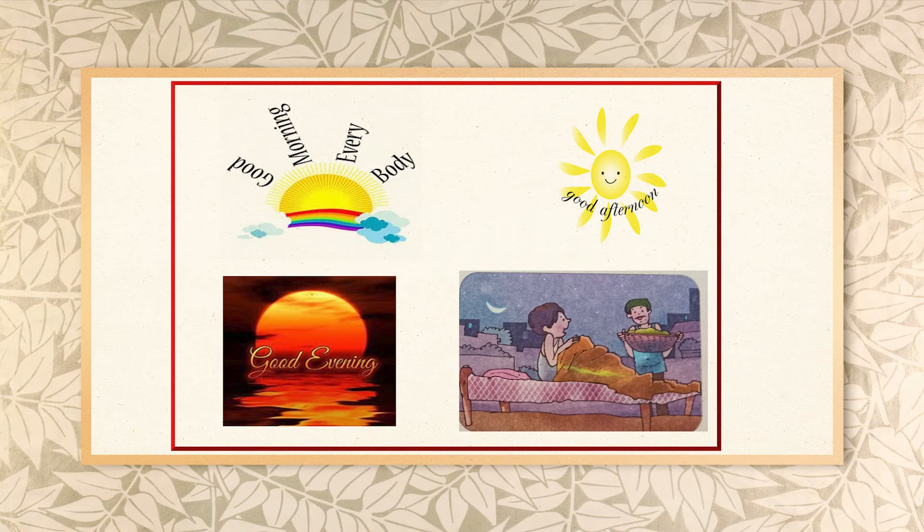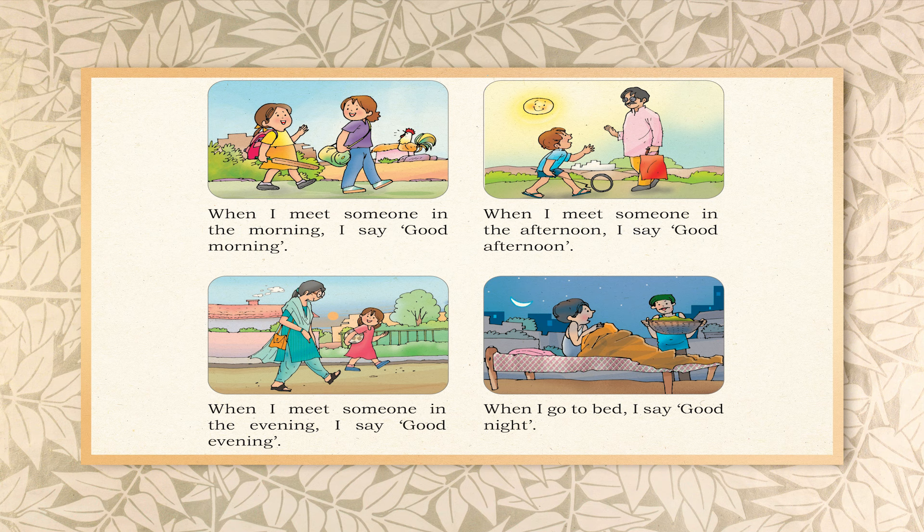So kids, in this way: when we meet someone in the morning — when the sun rises and birds chirp — we say good morning. When we meet someone after midday, when the sun is overhead and you have lunch with your friends, we use good afternoon. We say good evening when we meet somebody in the evening, when birds return to their homes and the sun goes down. And we say good night only when we go to bed.